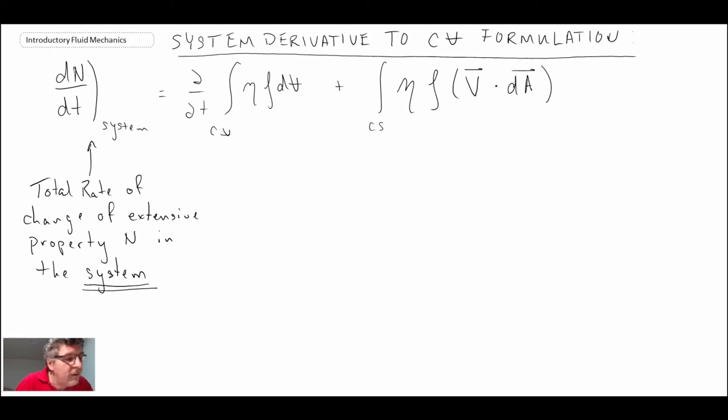And then the first term on the right-hand side, what this is, it's the time rate of change of our extensive property N in the control volume. And so, it's important to note that that's in the control volume.